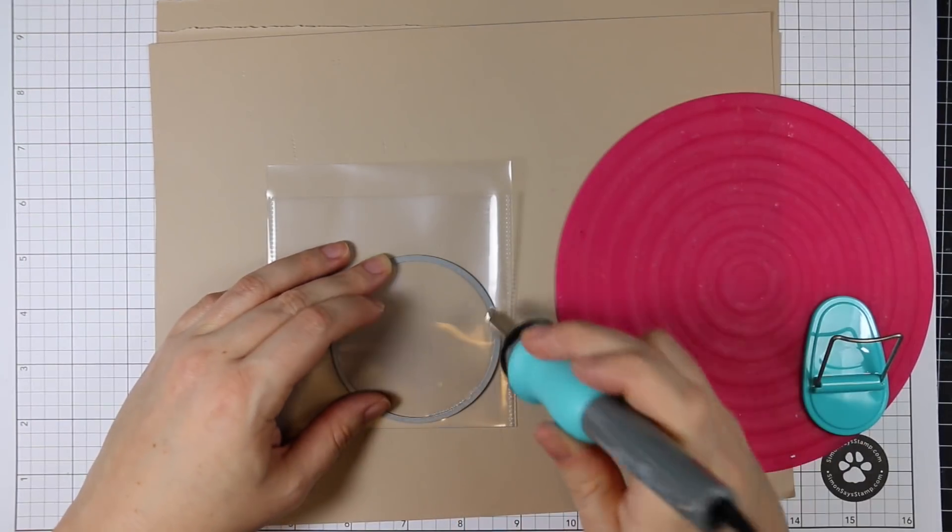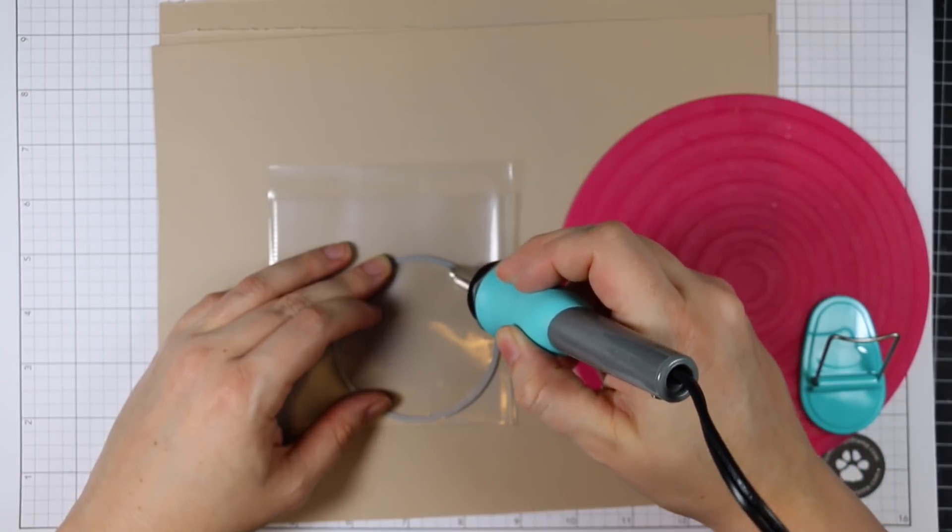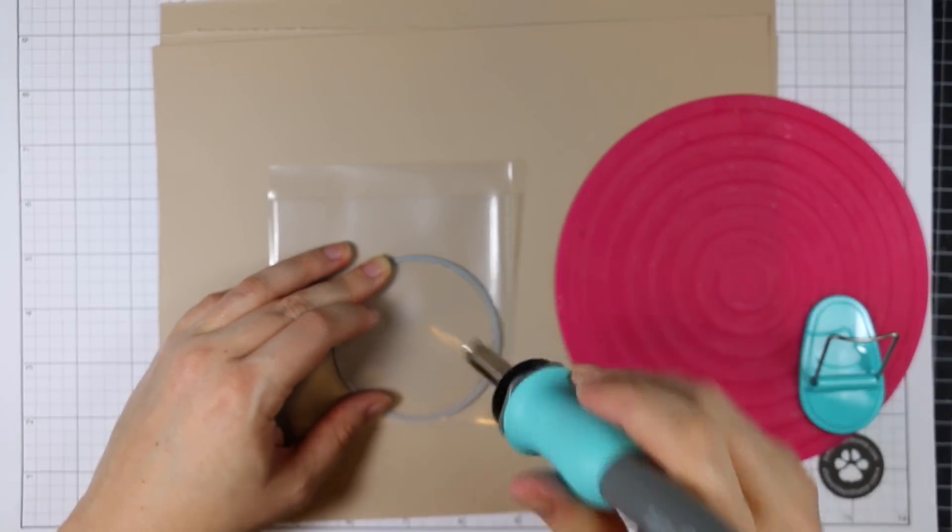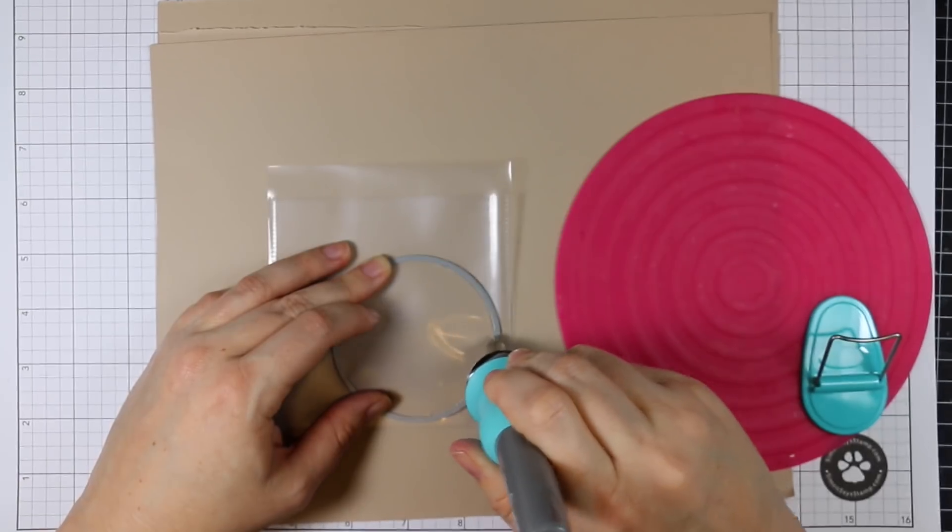My original plan was to make a flat shaker card similar to the one I made in my Halloween series, but then the more I was looking at it I was like these would be fun to just make some really easy ornaments with, so that's what I did.